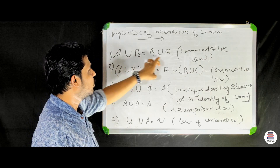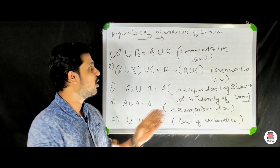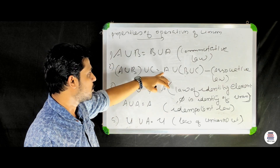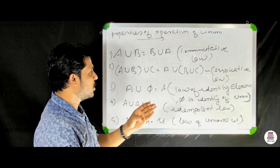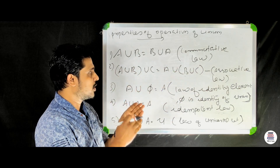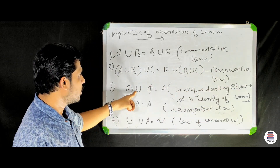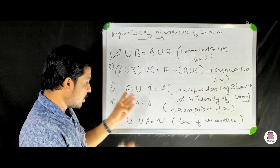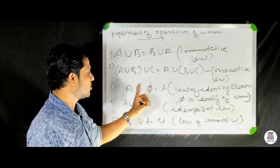The properties of union are: First, A union B is equal to B union A — this is the commutative law. Second, A union (B union C) is equal to (A union B) union C — this is the associative law. Third, A union null set is equal to A.